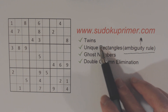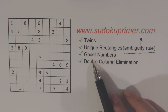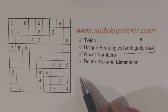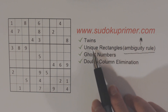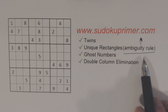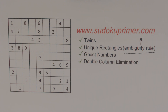Before we get started, I just want to mention that we're going to use these techniques and a few others to solve this puzzle. You can see write-ups about these techniques on sudokuprimmer.com. The unique rectangles one is called the ambiguity rule on the website, so just look for the ambiguity rule. It's a very powerful technique for difficult puzzles — a little bit harder to grasp, but once you understand it, it can help you quite a bit.